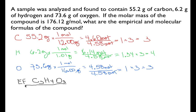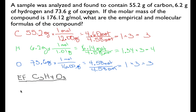We were also asked to find the molecular formula. To do that, we compare the molecular weight to the empirical weight. Using our empirical formula, 3 carbons is 3 times 12 = 36, plus 4 hydrogens = 4, plus 3 oxygens = 48, giving an empirical weight of 88 grams per mole.